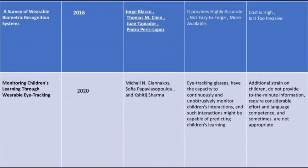Third title: A survey of wearable biometric recognition systems, published in 2016. The pros include: high accuracy, not easy to forge, and more available. The cons are: cost is high and it may be too invasive.